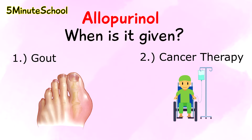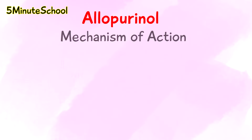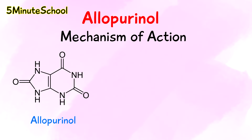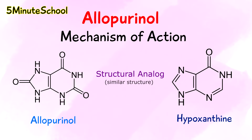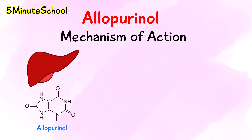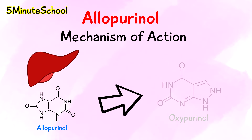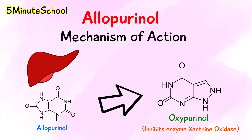Allopurinol is a structural analogue of the natural purine base hypoxanthine. Once it is ingested, in the liver it is metabolized into its active form oxypurinol, also known as alloxanthine, which is an inhibitor of the enzyme xanthine oxidase.